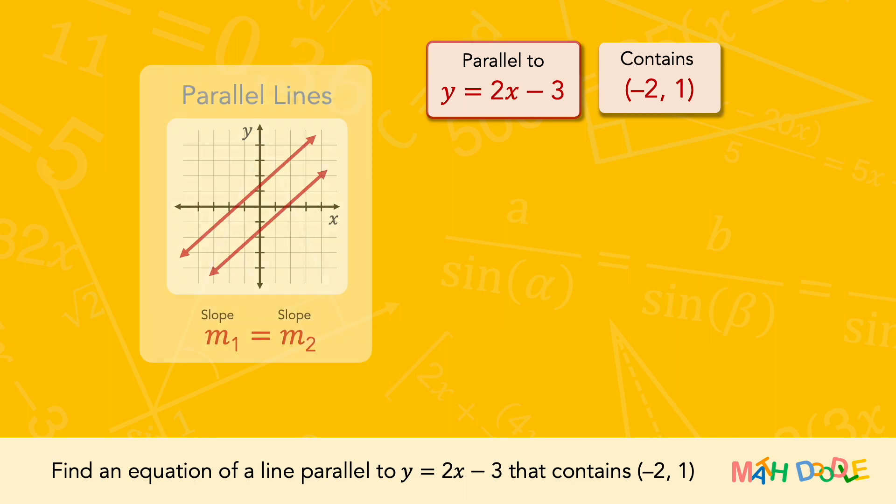First, the line of the equation is parallel to y equals 2x minus 3. Because parallel lines have the same slope, the line of the equation we are looking for has a slope of 2.